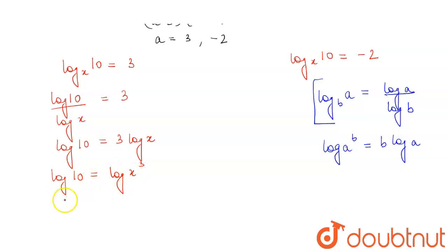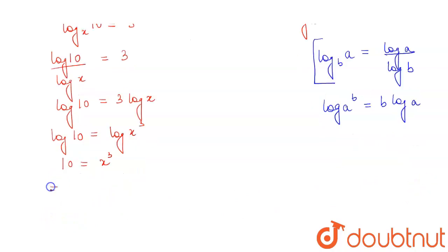Taking antilog on both sides, we will get 10 equals x cube. And from here we get the value of x as 10 to the power 1 by 3.